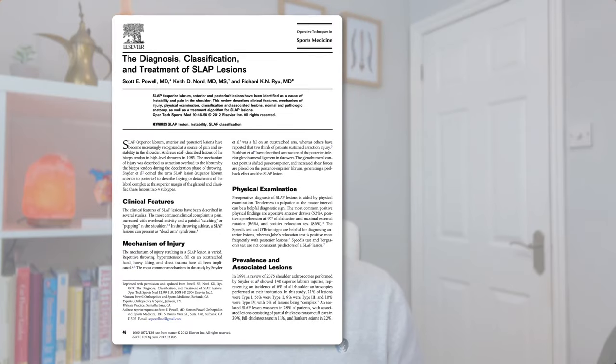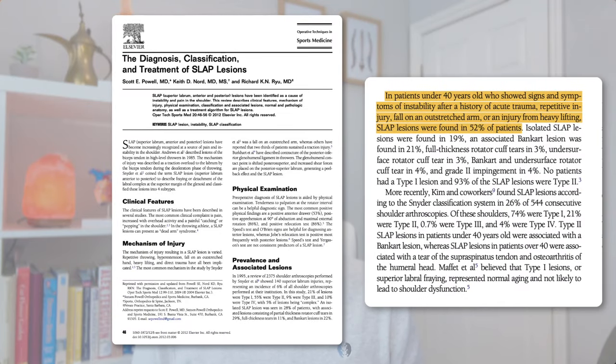This has been backed up in research. Powell et al. 2012 found that in patients under 40 years old who showed signs and symptoms of instability after a history of acute trauma, repetitive injury, fall on an outstretched arm, or injury from heavy lifting, SLAP lesions were found in 52% of these patients.